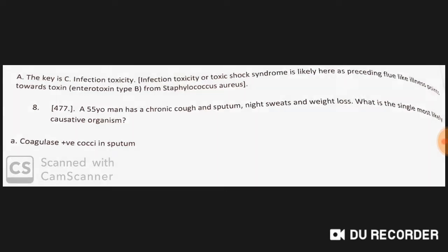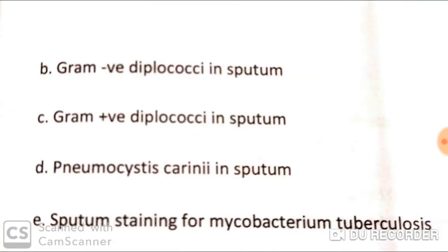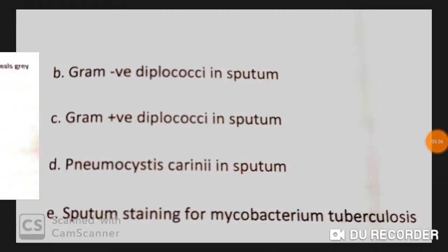A 55-year-old man has chronic cough with sputum, night sweats, and weight loss. The single most likely causative agent is Mycobacterium tuberculosis, as sputum staining for AFB is indicated. This is a classic case of TB.